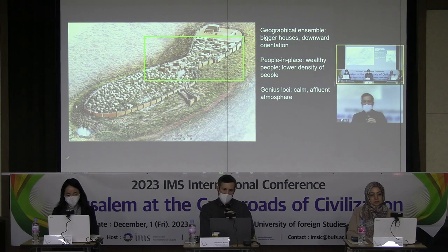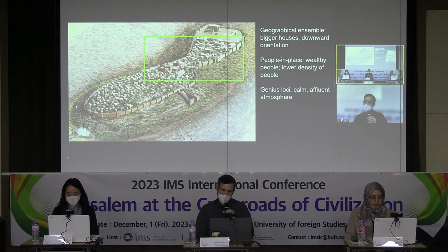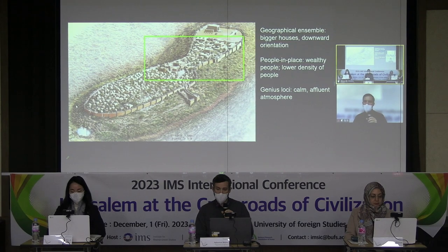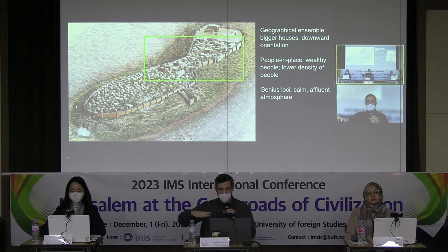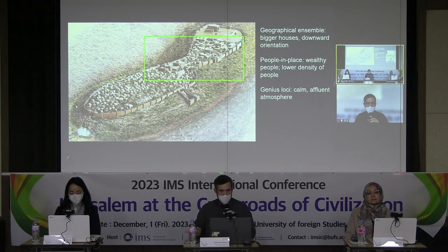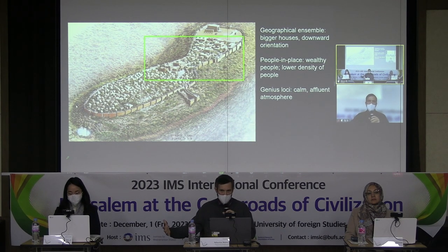In the middle part we have the administrative centers; the palace is also located there. We have bigger, more luxurious houses and a downward orientation — those people can literally look down on those living below. They would be wealthier and more influential, with lower population density, so they have bigger spaces to live. For the genius loci, I would expect a calmer, more affluent atmosphere.